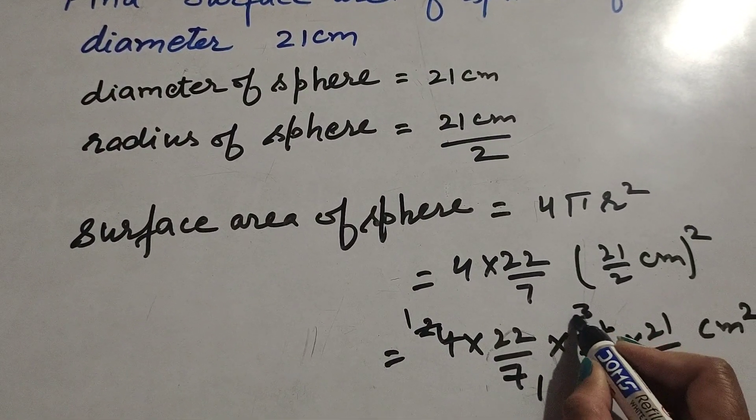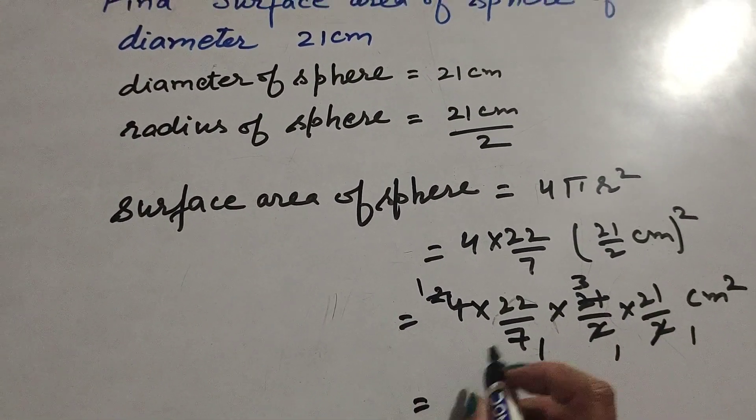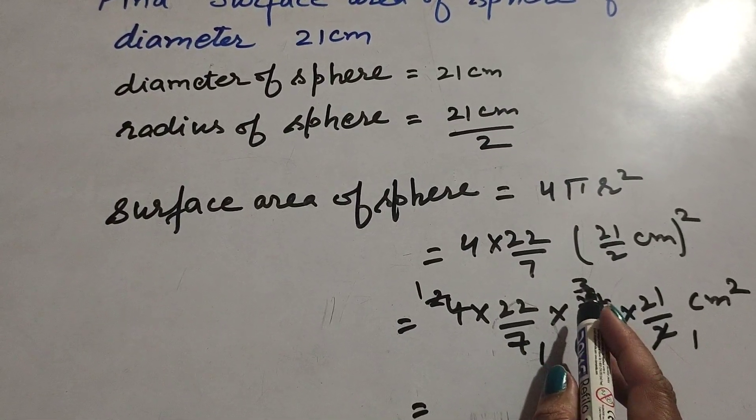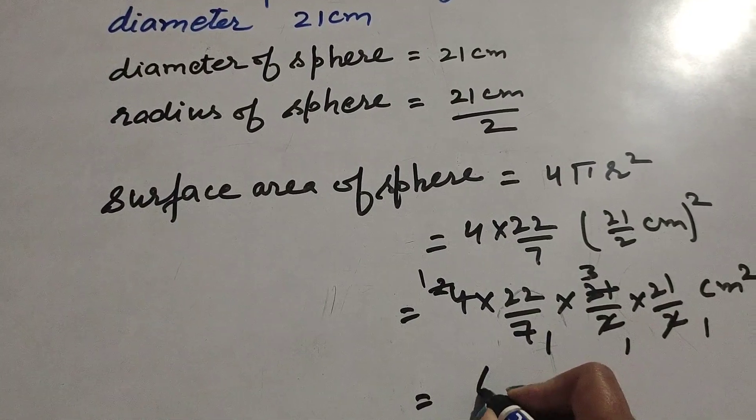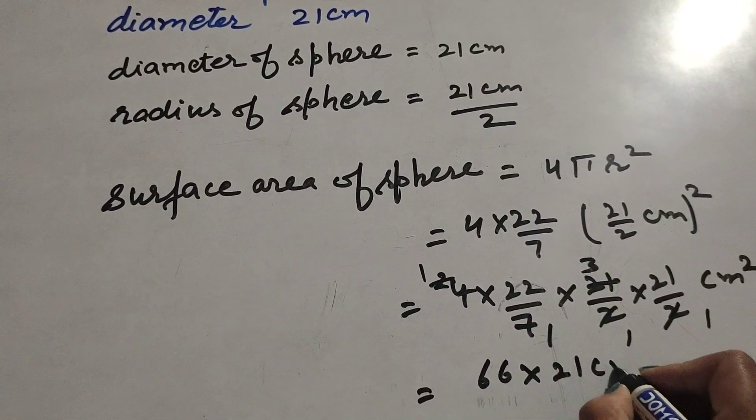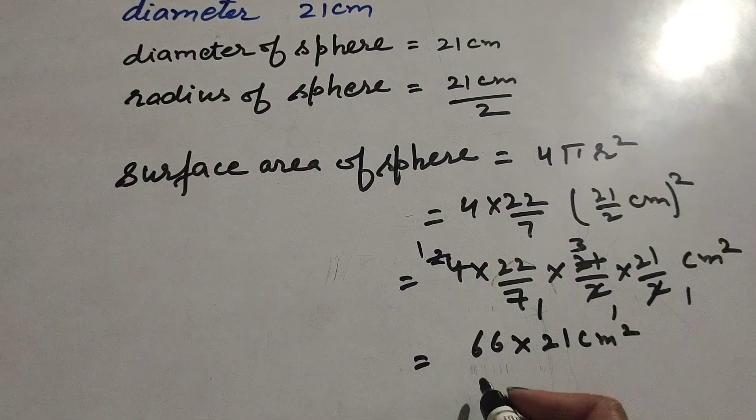Now 22 multiplied by 3 gives us 66, and 66 is multiplied by 21 centimeters squared.